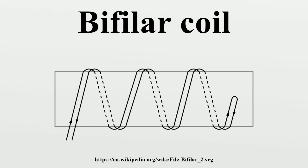A different type of bifilar coil is used in some relay windings and transformers used for a switched mode power supply to suppress back EMF. In this case, the two wire coils are closely spaced and wound in parallel but are electrically isolated from each other. The primary coil is driven to operate the relay and the secondary coil is short-circuited inside the case. When the current through the primary is interrupted, most of the magnetic energy is intercepted by the secondary coil which converts it to heat in its internal resistance.